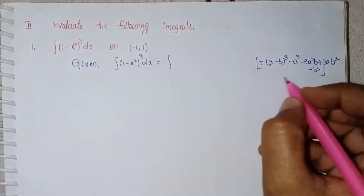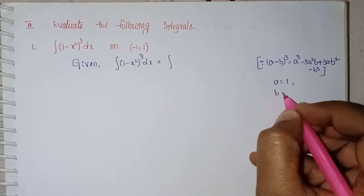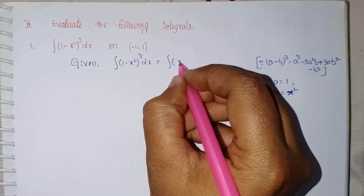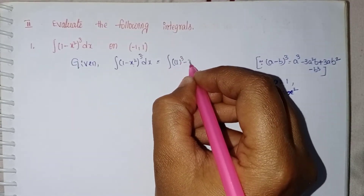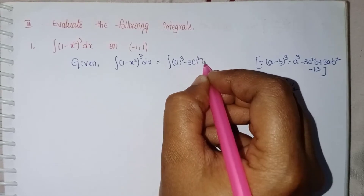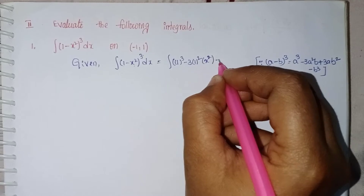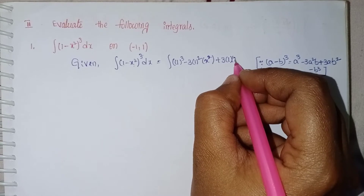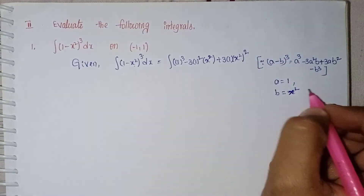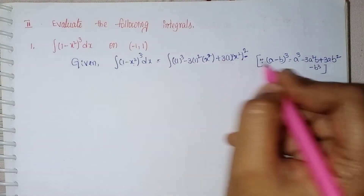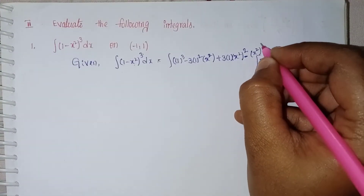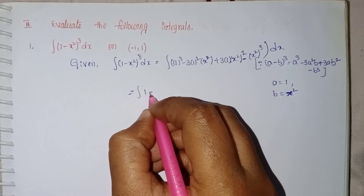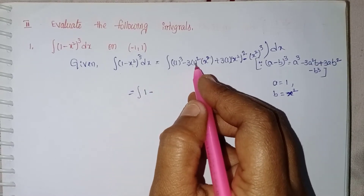Substitute a = 1 and b = x² into the identity: 1³ - 3·(1²)·(x²) + 3·(1)·(x²)² - (x²)³, all multiplied by dx.